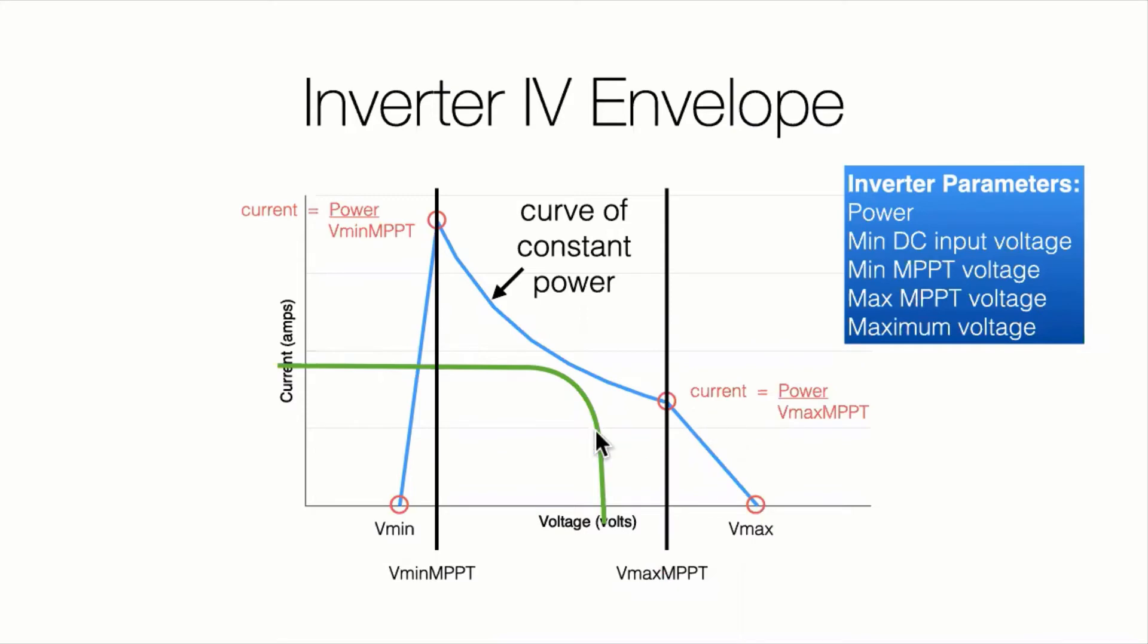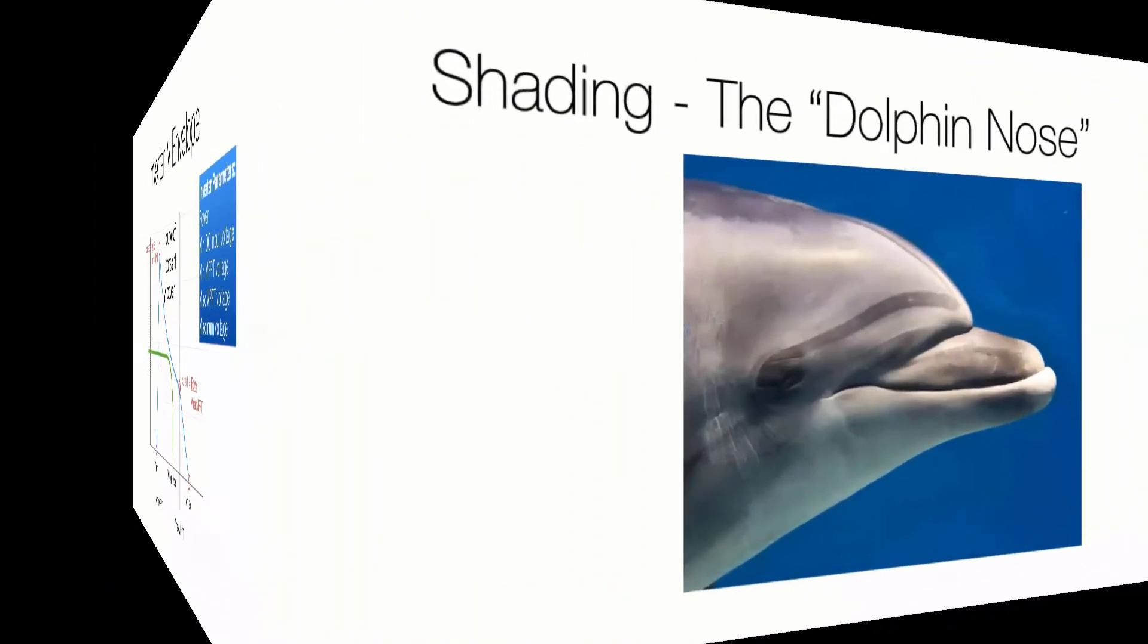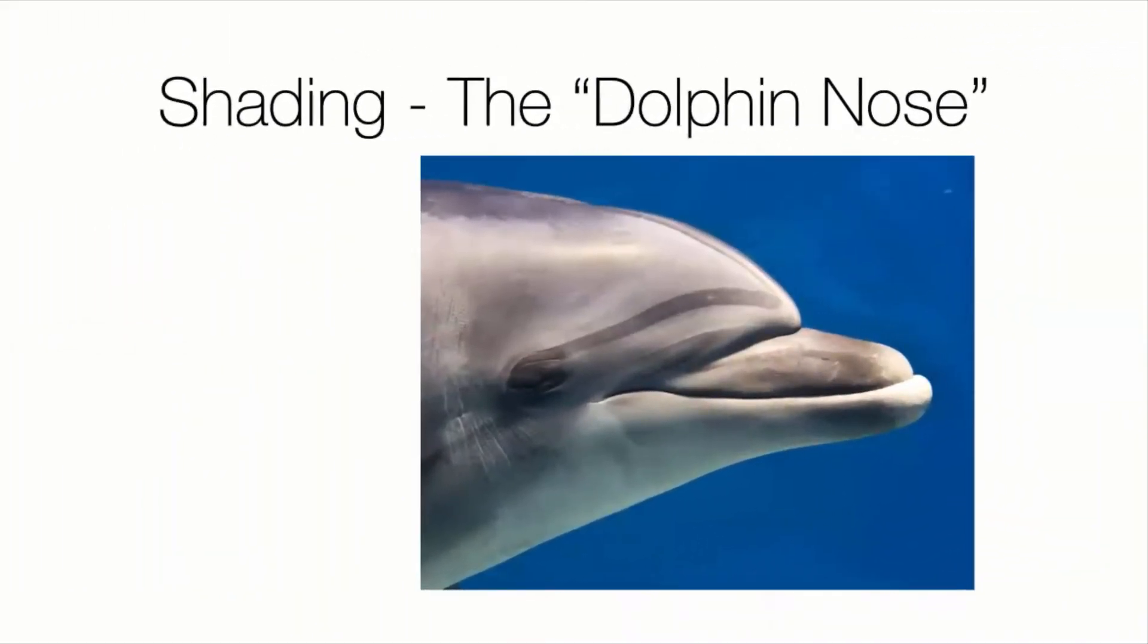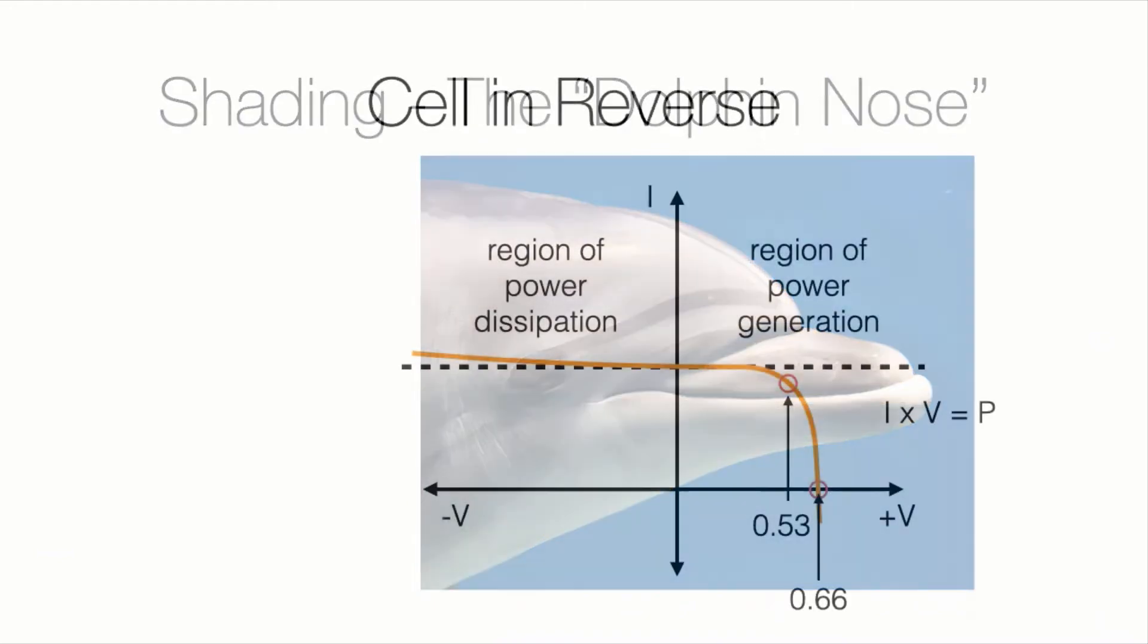And so this leads me to matching the number of modules I put in series with my inverter. If I can get my array curve to somehow fit within the envelope of the inverter, it'll work. But now let's introduce some shading and see what's going on there. And I call it the dolphin nose because it looks like a dolphin nose to me.